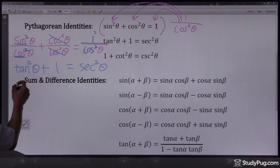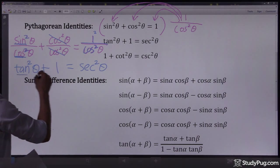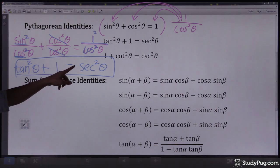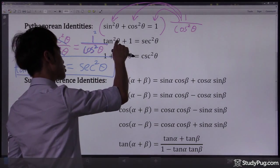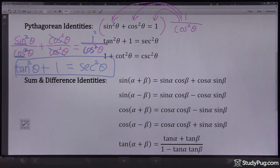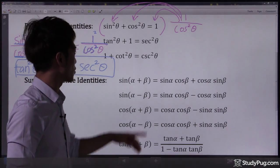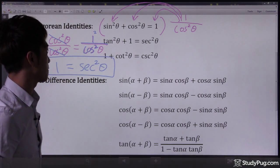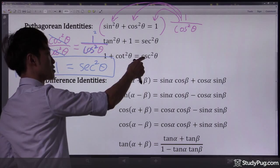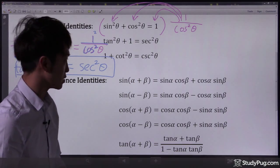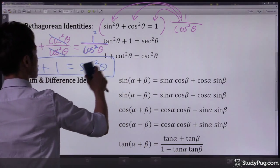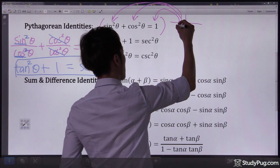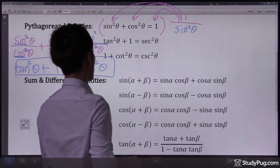So we get tangent squared plus one equals secant squared — we successfully proved the second Pythagorean identity. Now to prove the third and last Pythagorean identity, instead of multiplying by one over cosine squared, we multiply by one over sine squared and see what we get.